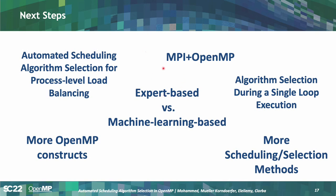There are many directions for extending this work toward fully automatic load balancing for OpenMP applications. Some ideas we are already working on include comparing expert-based methods such as fuzzy logic against machine learning approaches, and extending automatic selection to more OpenMP constructs. Moving this scheduling selection knowledge from OpenMP to MPI is also very important, and we want to study how the interplay between OpenMP and MPI scheduling can be coordinated automatically.